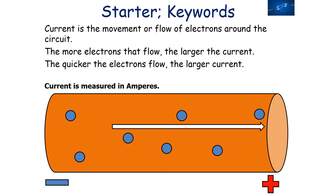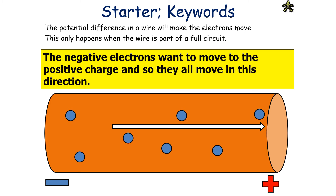Current is the movement or flow of electrons around the circuit. The more electrons that flow, the larger the current. The quicker the electrons flow, the larger the current. The potential difference in a wire will make the electrons move, but this will only happen when the wire is part of a full circuit. The negative electrons want to move to the positive charge, and so they all move in that particular direction.